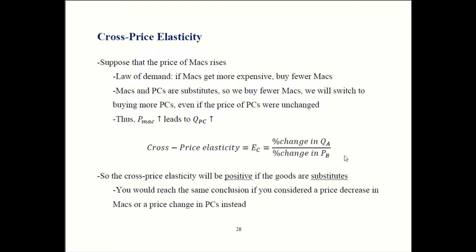Let's just verify quickly. If the price of PCs were to rise, the law of demand says buy fewer PCs. Again, buy less of something when it gets more expensive. If we're buying fewer PCs, we're going to start buying more Macs instead. That means the price increase in PCs ultimately led us to buy more Macs. Again, positive relationship between price of PCs and quantity of Macs to get a positive number of that formula.